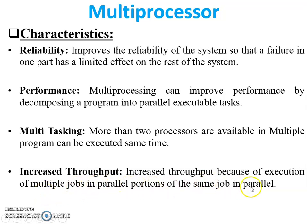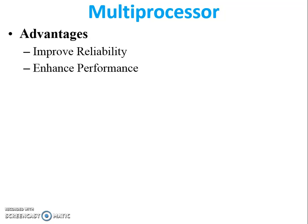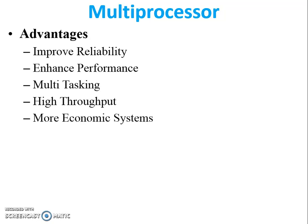Throughput increases because of execution of multiple jobs or portions of the same job in parallel. For example, in a single processor system a task may take five minutes, but with multiprocessors we can complete it within one or two minutes or less. Advantages include: improved reliability, enhanced performance, multitasking, high throughput, and a more economic system compared to a multi-computer system.